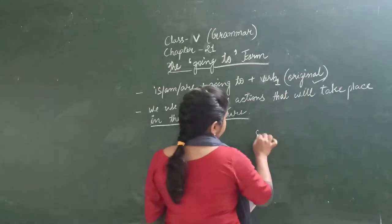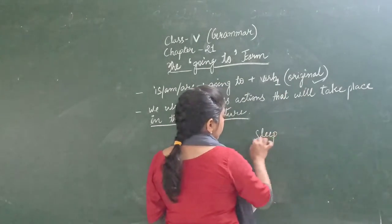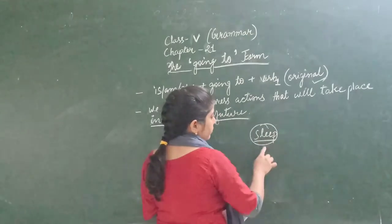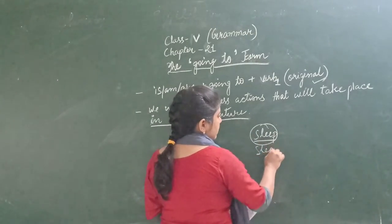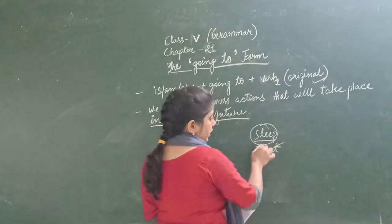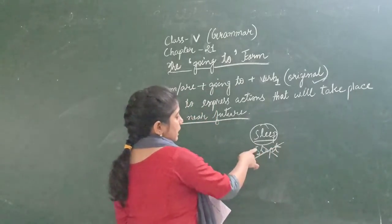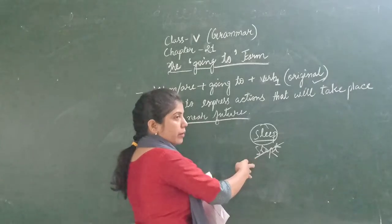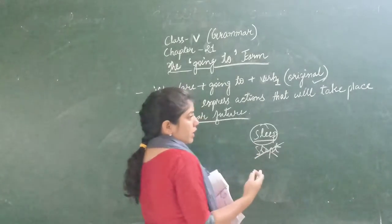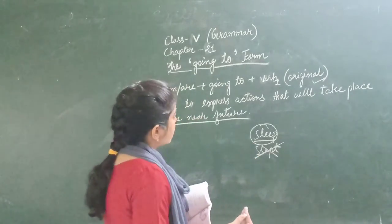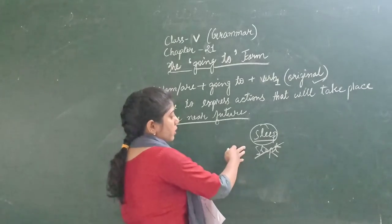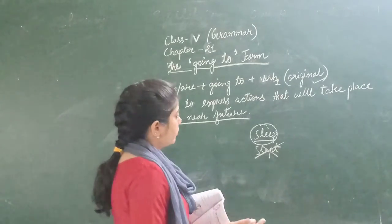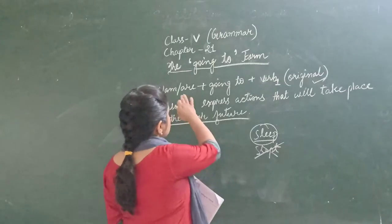For example, if I write sleep, then the form of the verb will be sleep. We will not write slept — that will be wrong. So sleep, eat, drink, bring — these are the original verb forms. We are not required to change the verb form.